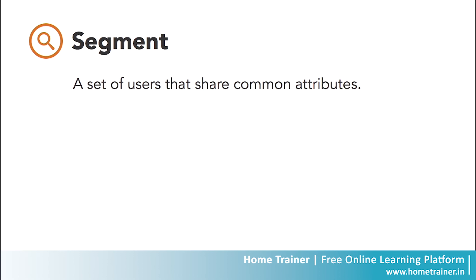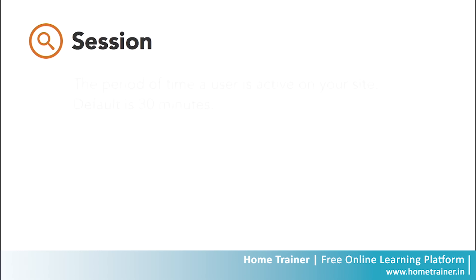If you're curious how Google understands how many page views a unique user provides, it's all about the session. A session is a period of time a user is active on your site. By default, if a user is active for 30 minutes or more, any future activity is attributed to a new session, meaning there is a repeat visit. Users that leave your site and return within 30 minutes are counted as part of the original session.